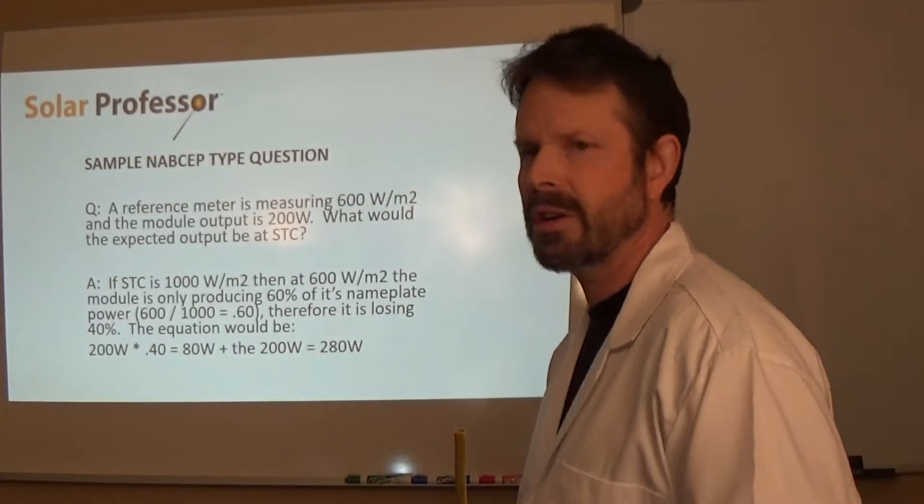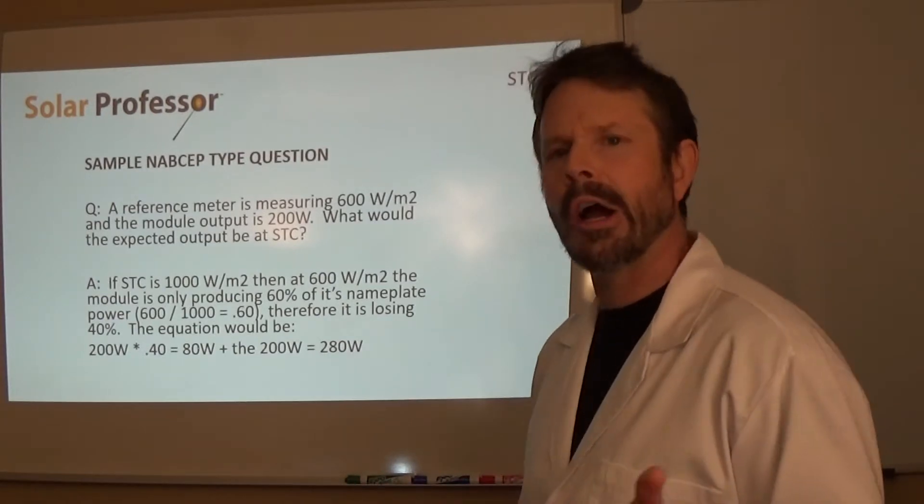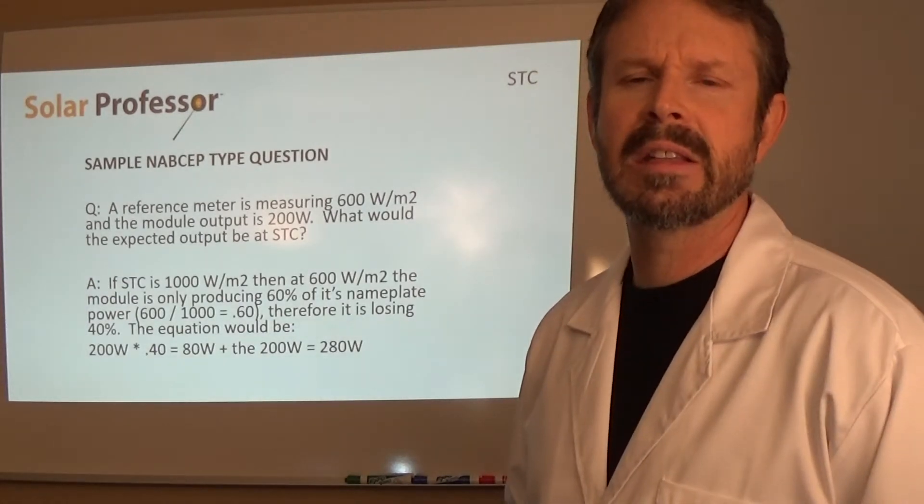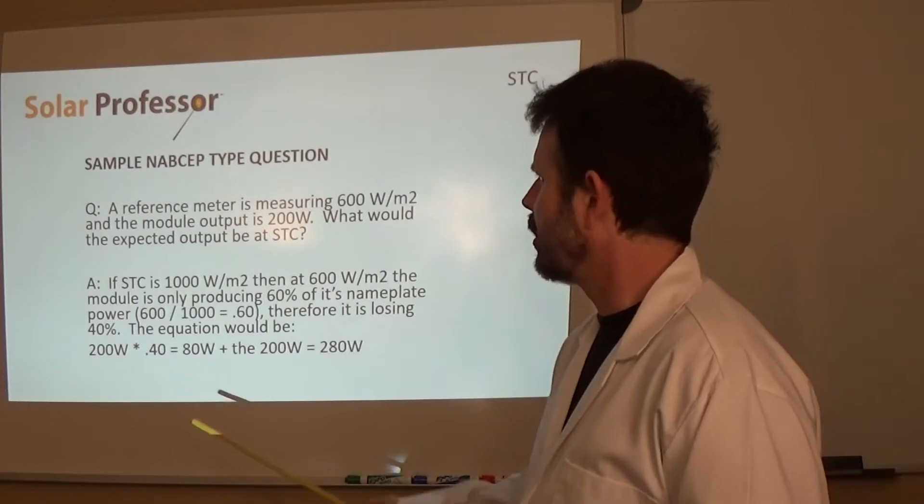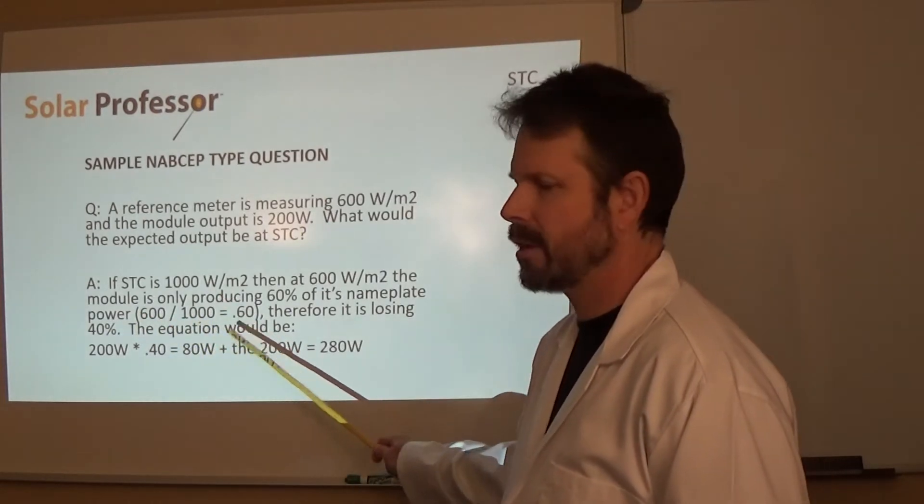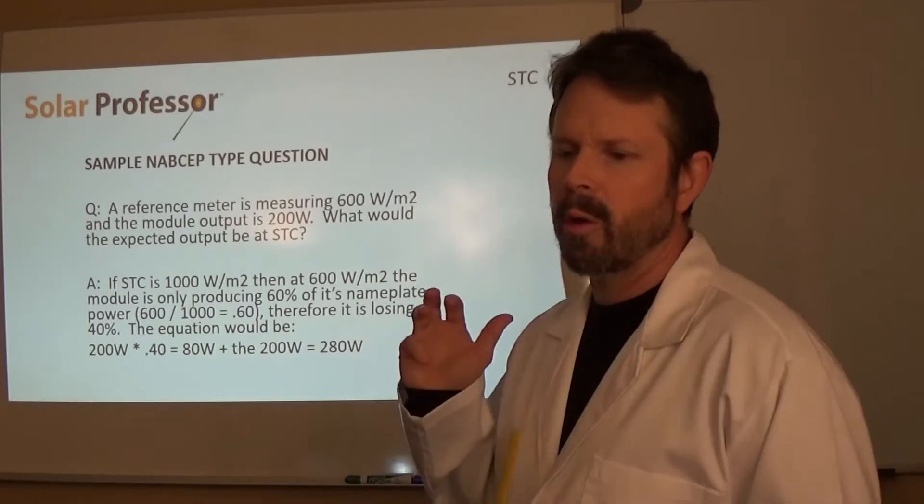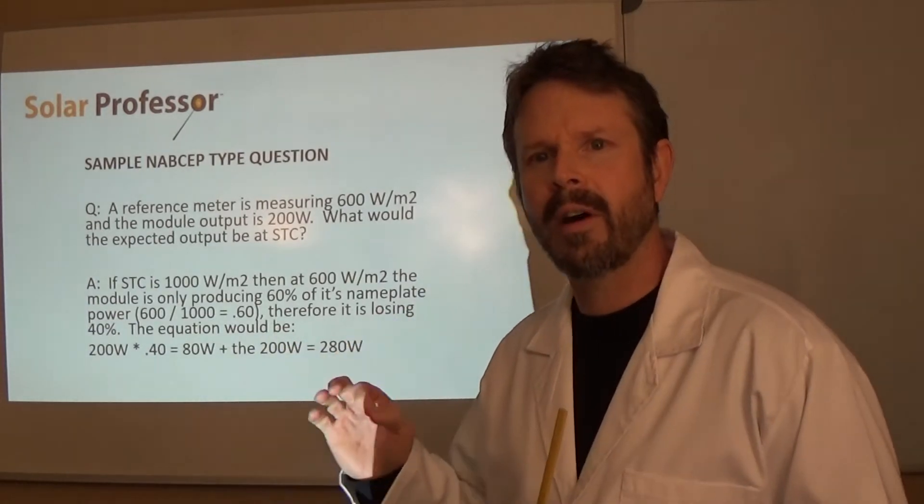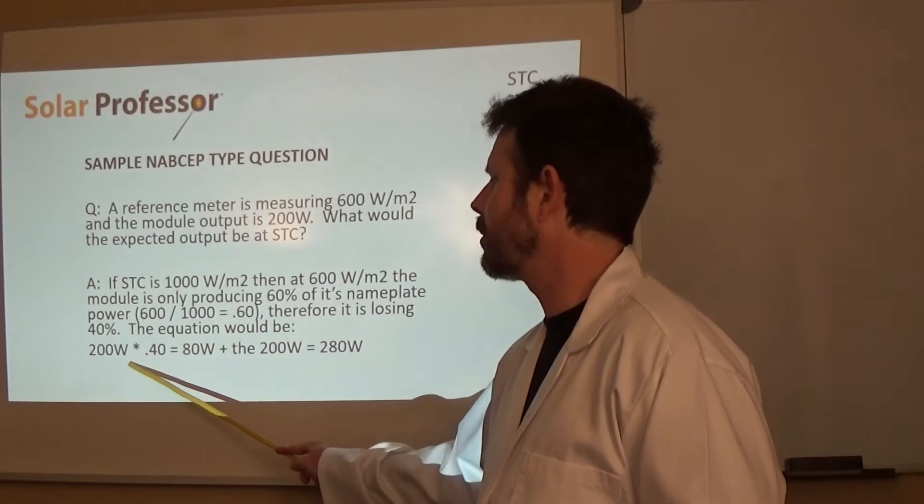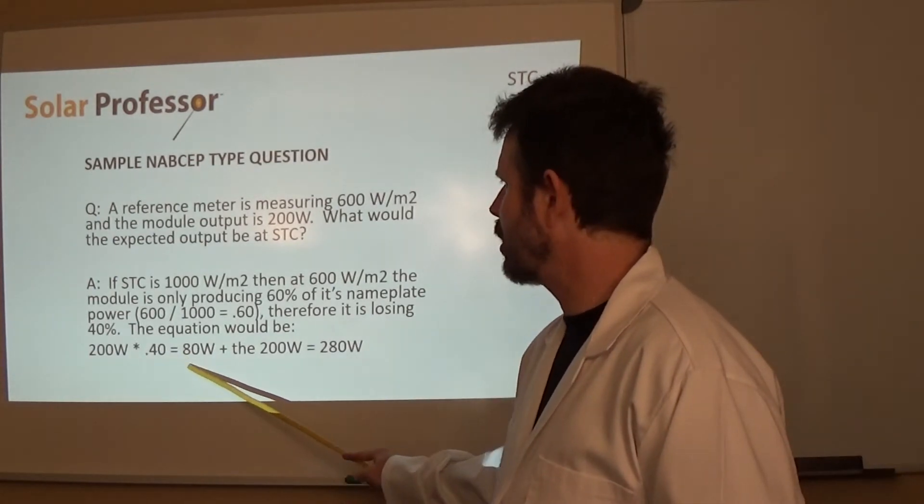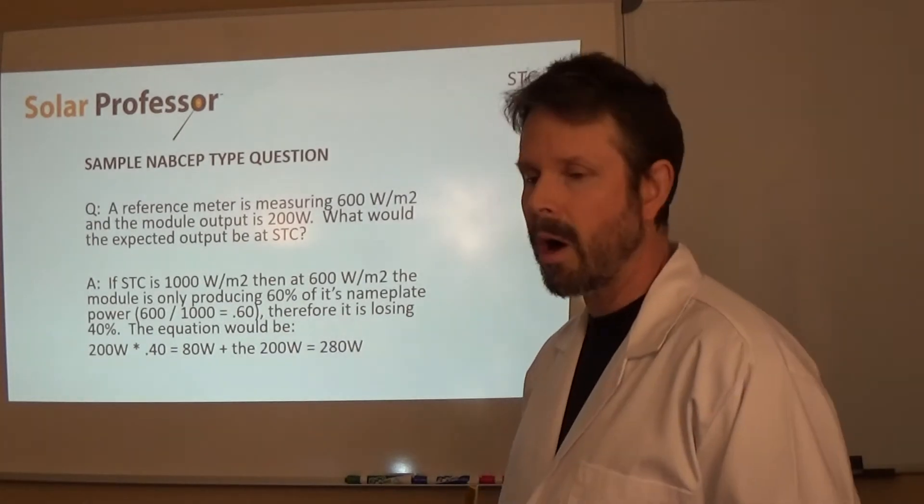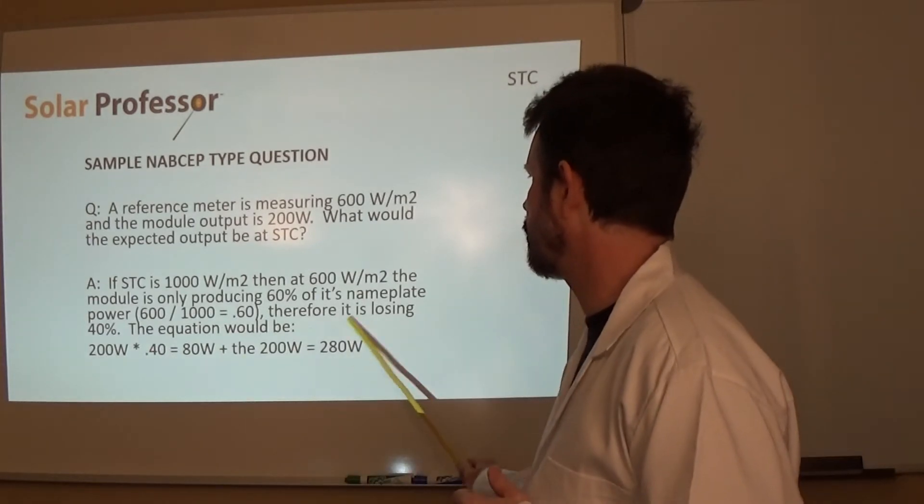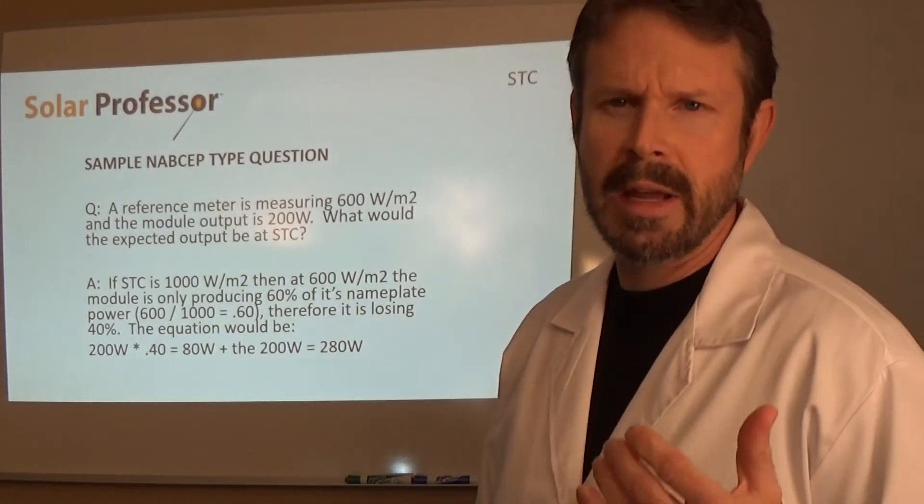If standard test conditions is 1,000 watts per meter squared, we know that. Then 600 watts per meter squared is only producing 60% of its nameplate rating. The math can be done this way. 600 divided by 1,000 equals 60% right there. Therefore, the module is losing 40% of its power. Equation would be, in this case, to figure out the final answer, 200 watts, multiply that by the 40%, and then you're going to get an answer of 80 watts. That's what it's losing. You need to add that 80 watts back to the 200, and you get a total of 280 watts being produced at standard test conditions.